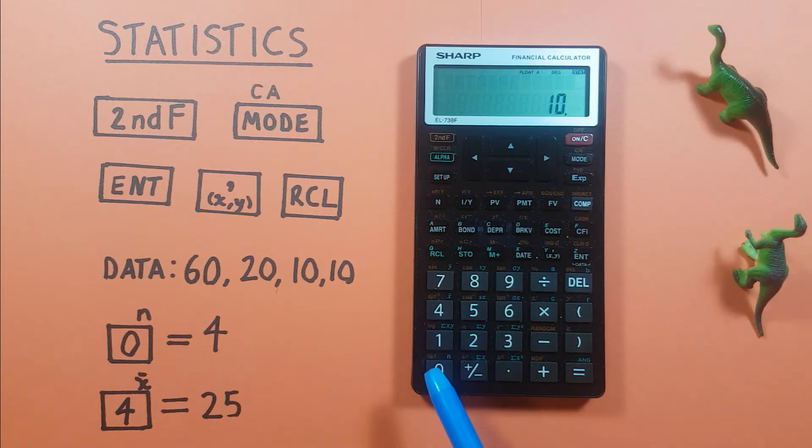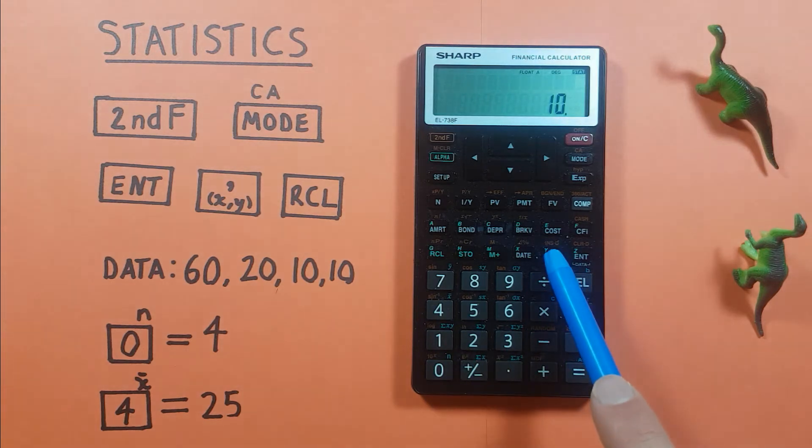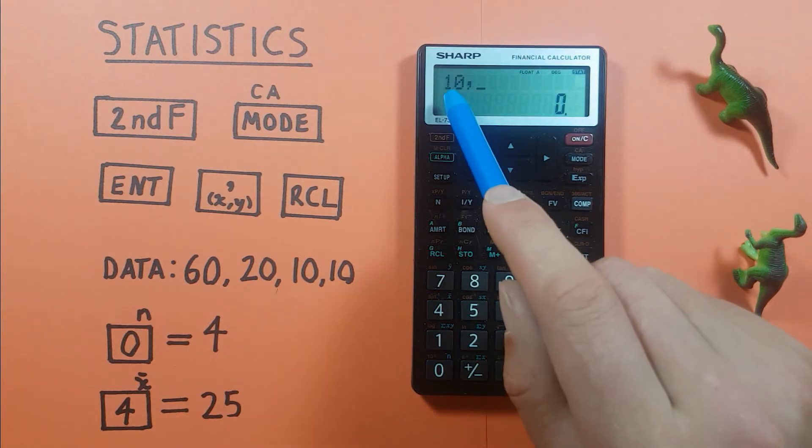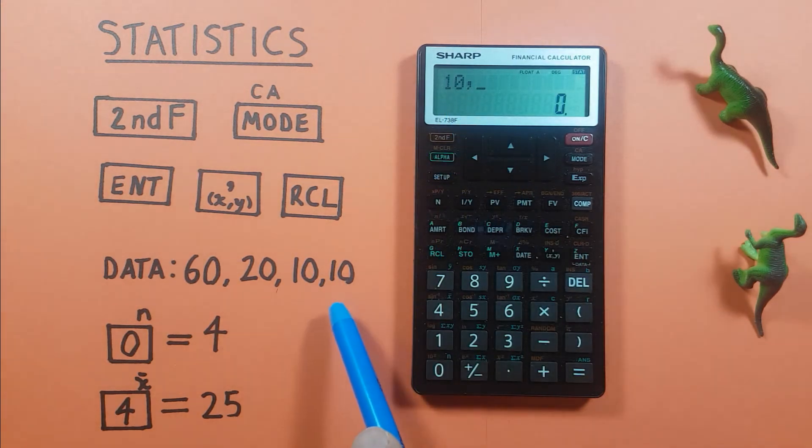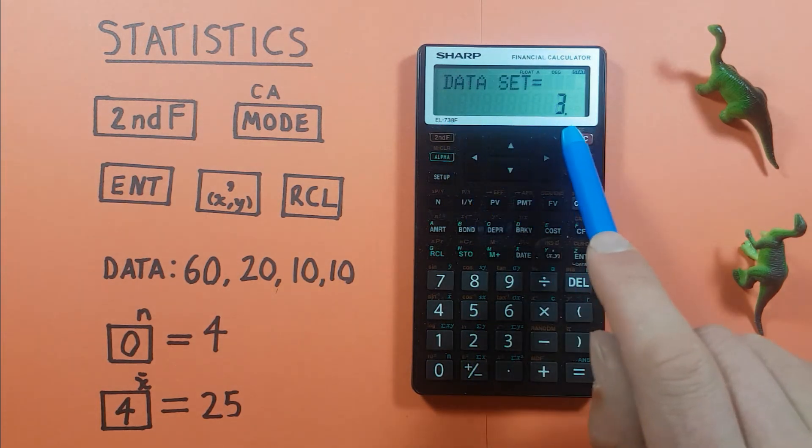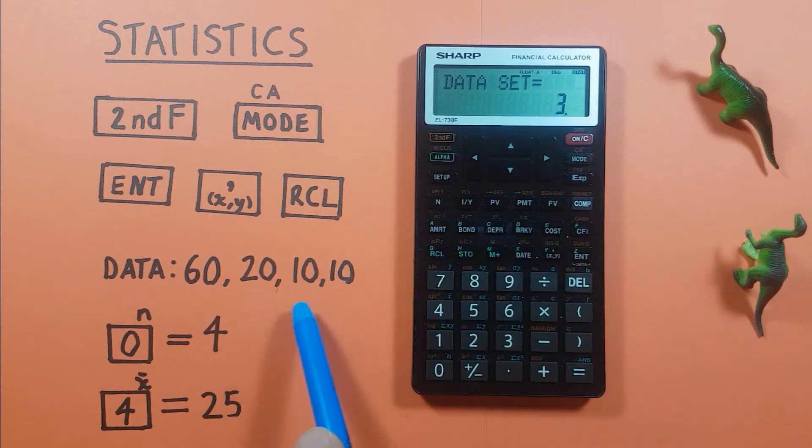So we write the 10 and then we use this comma key here. So that we get a comma after the 10 and then we enter the number of times that the 10 occurs. Well for us that's twice. So we'll hit 2 and then hit the enter key. Now you'll see a 3 for your data set here. It won't go up by 2 but just know that has entered both 10s.